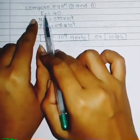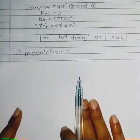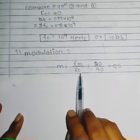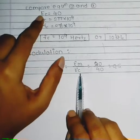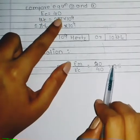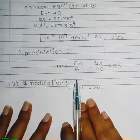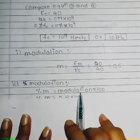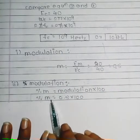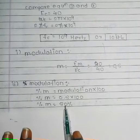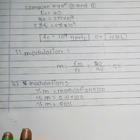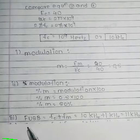Now we calculate the modulation index: M = Em / Ec = 20 / 40 = 0.5. For percent of modulation, we multiply by 100, giving 0.5 × 100 = 50%.